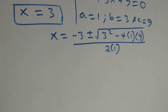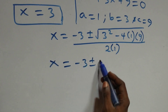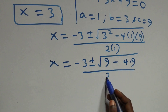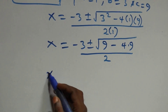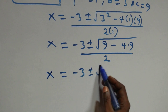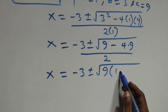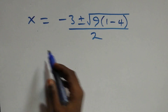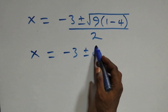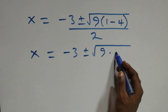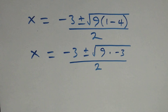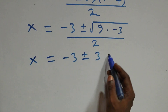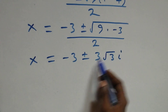We have x equals to minus 3 plus or minus square root of 9 minus 4 times 9, all over 2. Factoring out 9: x equals to minus 3 plus or minus square root of 9 times (1 minus 4), that's minus 3, over 2. Separating, root of 9 is 3, so x equals to minus 3 plus or minus 3 root of minus 3, over 2. This implies two complex solutions from the second case as well.